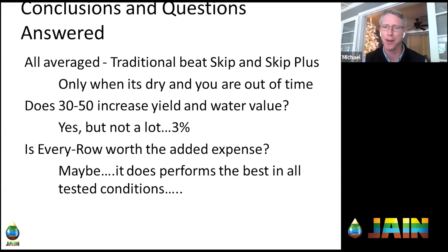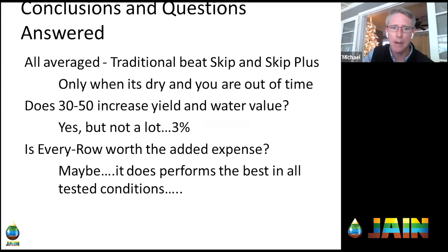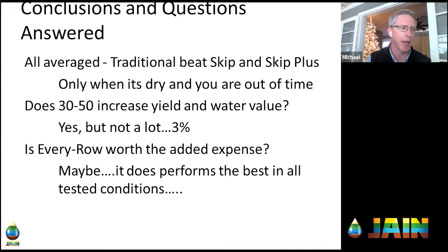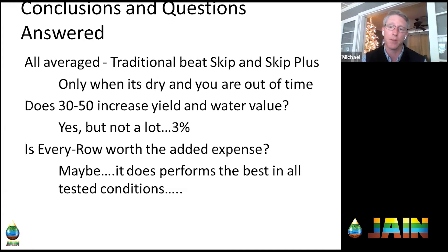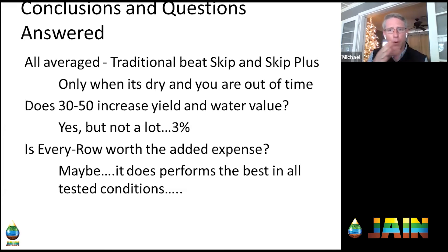The 30-50 spacing was super interesting. To clarify: it's traditional wide-spaced drip tape but with clustered rows — best of both worlds. How did it perform? It did better, but not a lot better — about a 3% increase in yield over the traditional over the five-year period. You could make the argument that if it doesn't cost you anything extra — if you already had drip tape on 80-inch spacing and your equipment handles the row adjustment — why not? And in the dry year of 2018, it really outperformed traditional by about 200–300 pounds, which is significant.